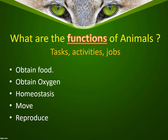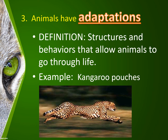Animals also have to reproduce. Reproduction is vital — if a species stops reproducing, it will die out. The next thing to talk about is adaptations. Remember, the definition of adaptations is structures and behaviors that allow animals to go through life — such as a kangaroo's pouch, which enables it to continue letting babies form and grow while it can still go out and find food and complete all its life functions.